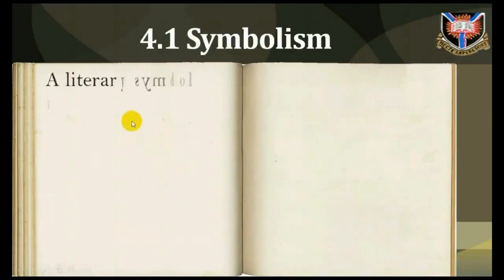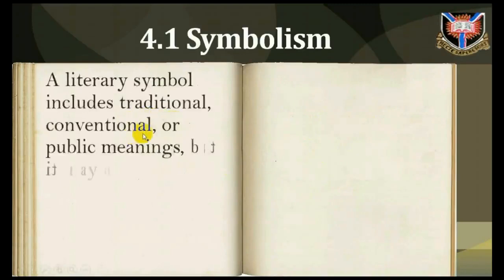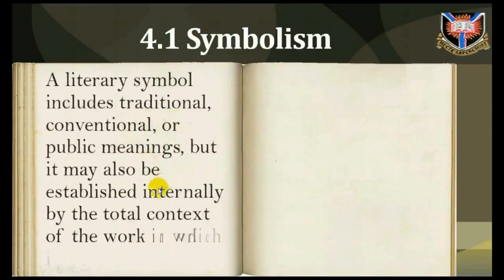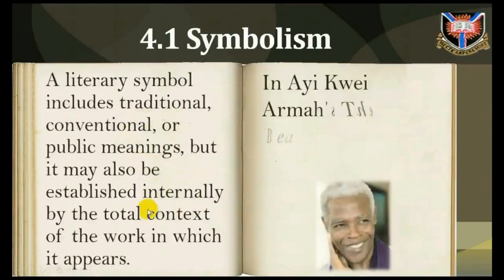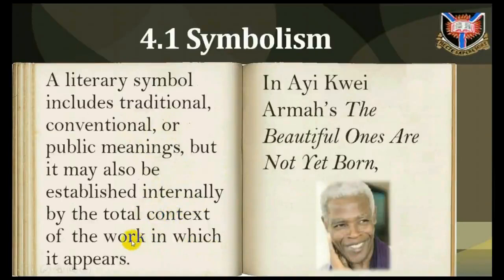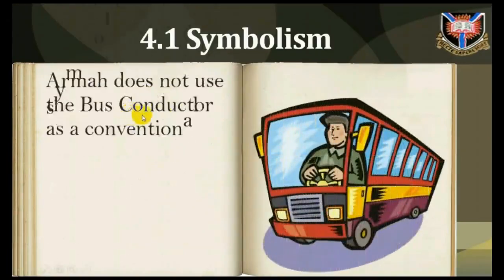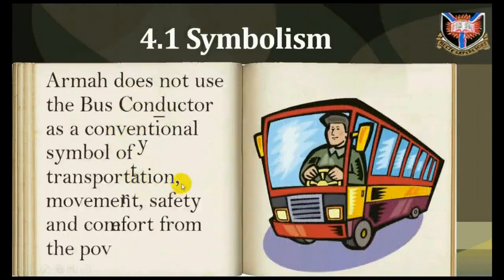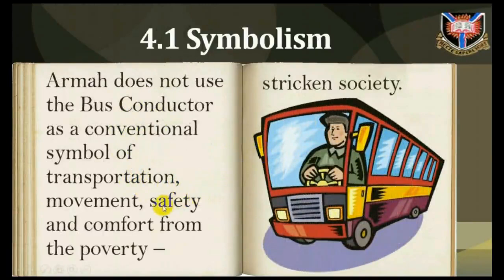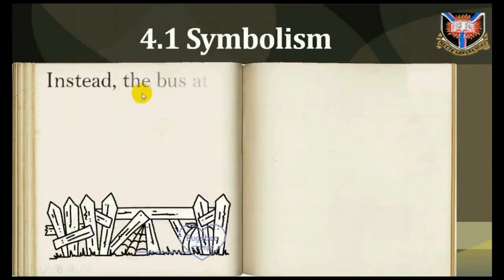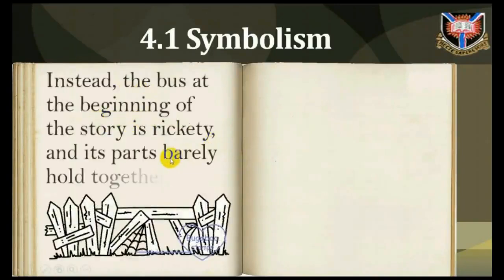A literary symbol includes traditional, conventional, or public meanings, but it may also be established internally by the total context of the work in which it appears. In Ayi Kwei Armah's 'The Beautyful Ones Are Not Yet Born,' Armah does not use the bus conductor as a conventional symbol of transportation, movement, safety, and comfort from a poverty-stricken society. Instead, the bus at the beginning of the story is rickety and its parts are held together with wire.